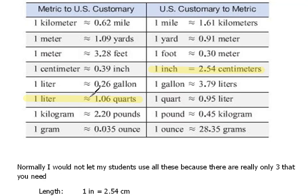The last one that is most important is this one right here: one kilogram is roughly equivalent to 2.2 pounds. If you know this one, then you can move within mass from the U.S. system to the metric system and back. So really, these are the absolute three that you should know.